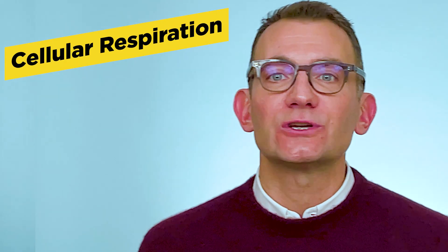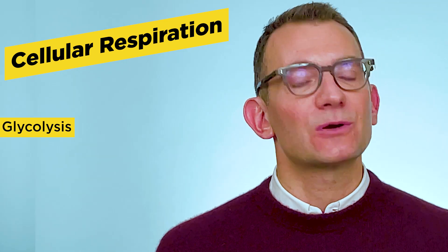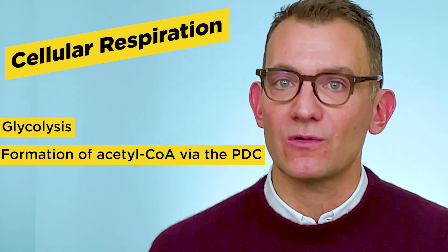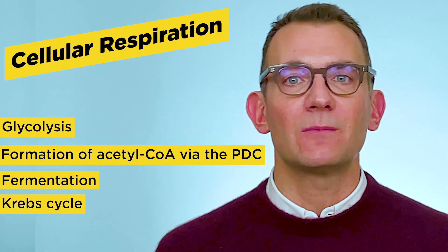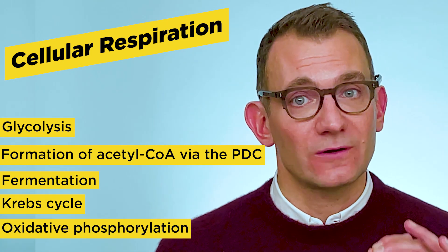You should also have a deep understanding of photosynthesis — the process by which plants use energy from sunlight to make sugar. The College Board will also test you on cellular respiration, the process by which glucose is oxidized to produce ATP. There are five processes involved in cellular respiration: number one is glycolysis, number two the formation of acetyl coenzyme A, number three is fermentation, number four the Krebs cycle, and number five oxidative phosphorylation.